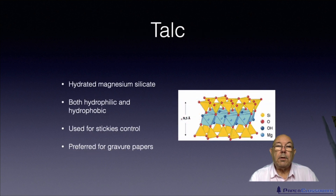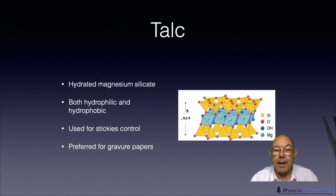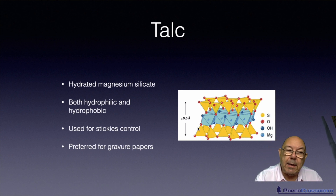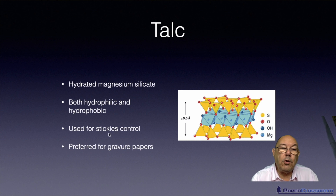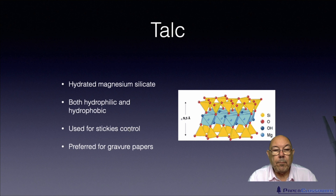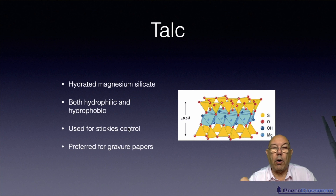Talc is a hydrated magnesium silicate — you have layers of magnesium sandwiched between layers of silicon. The surfaces can be either hydrophobic or hydrophilic. Because of the hydrophobic nature, talc is often used for stickies control, because it adheres very strongly to the outside of stickies, pacifying them and making them non-sticky. Gravure printing relies on oil-based inks, and those oil-based inks love the hydrophobic surface of the talc.